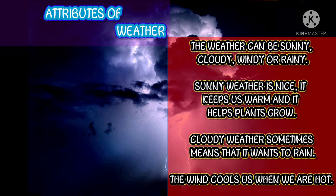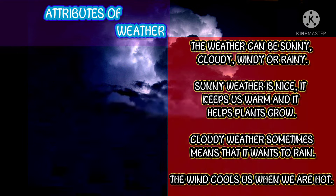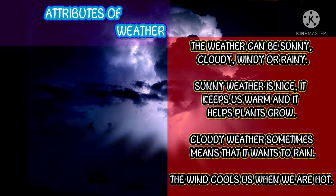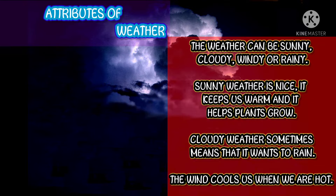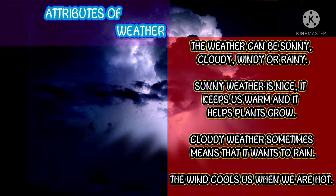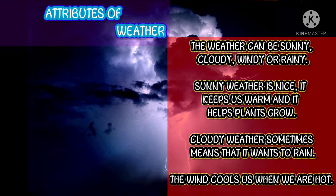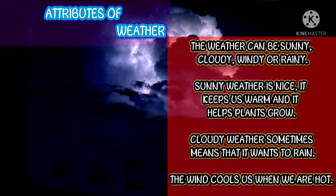The attributes of weather — the weather can be sunny, cloudy, windy, or rainy. Sunny weather is nice: it keeps us warm and it helps plants grow. Cloudy weather sometimes means that it is going to rain. Windy weather can be nice too — the wind cools us when we are hot, and it also blows all the leaves off the trees onto the ground.